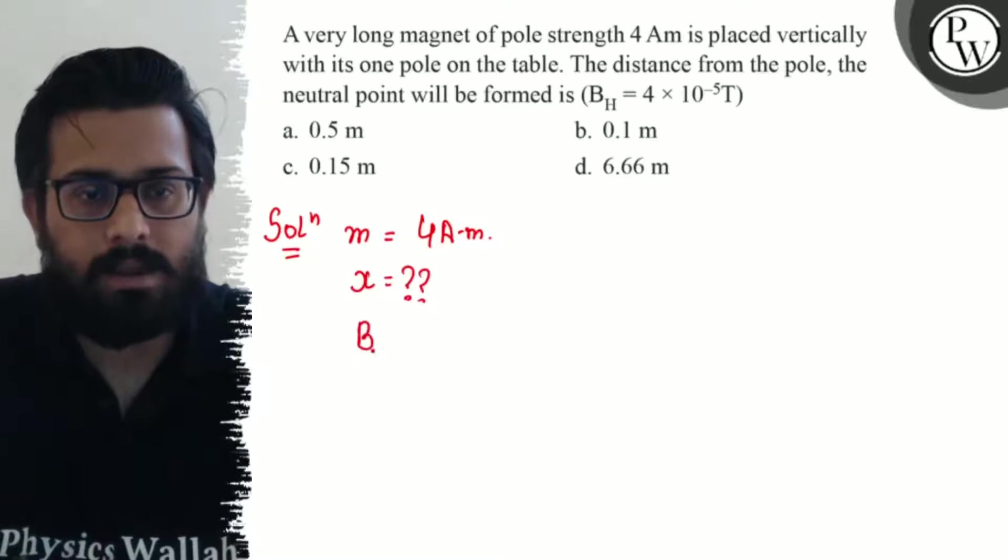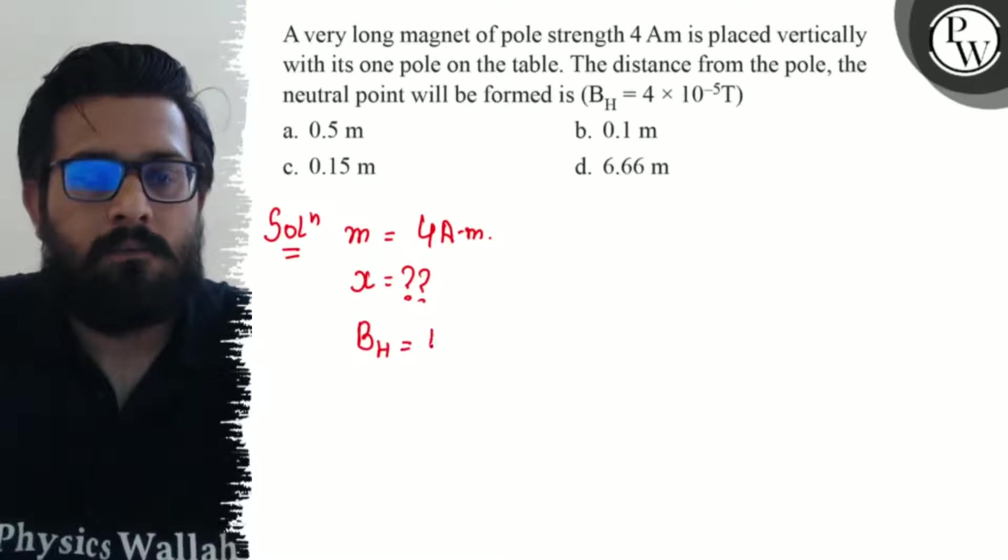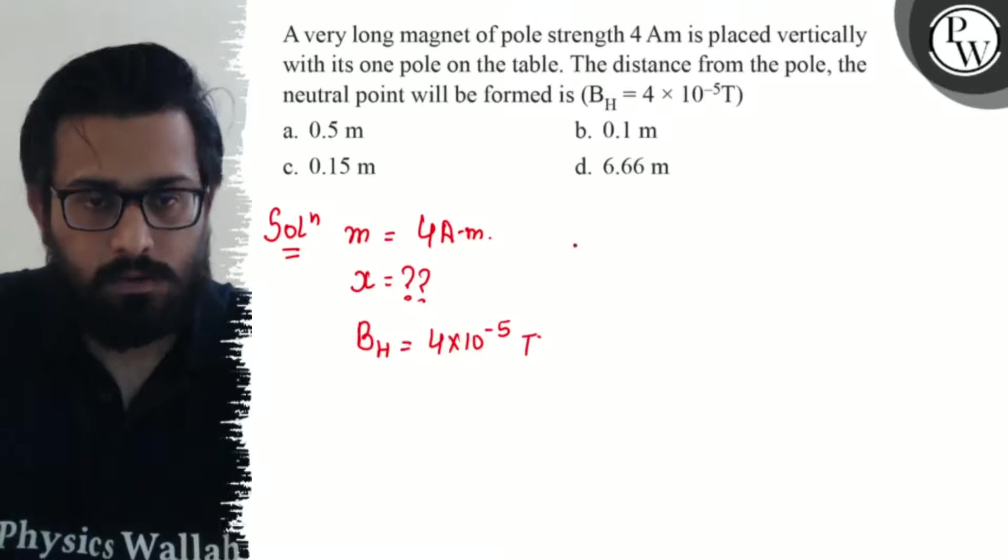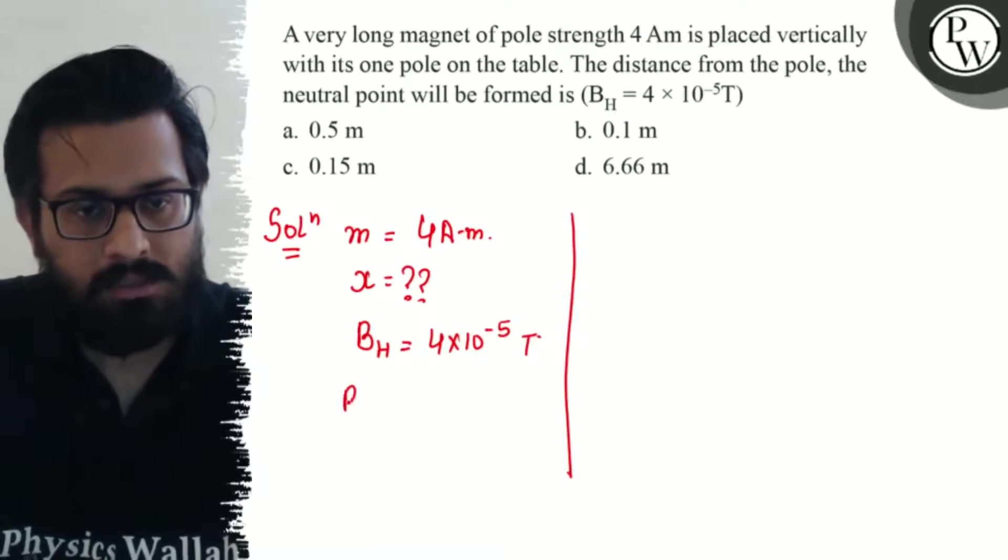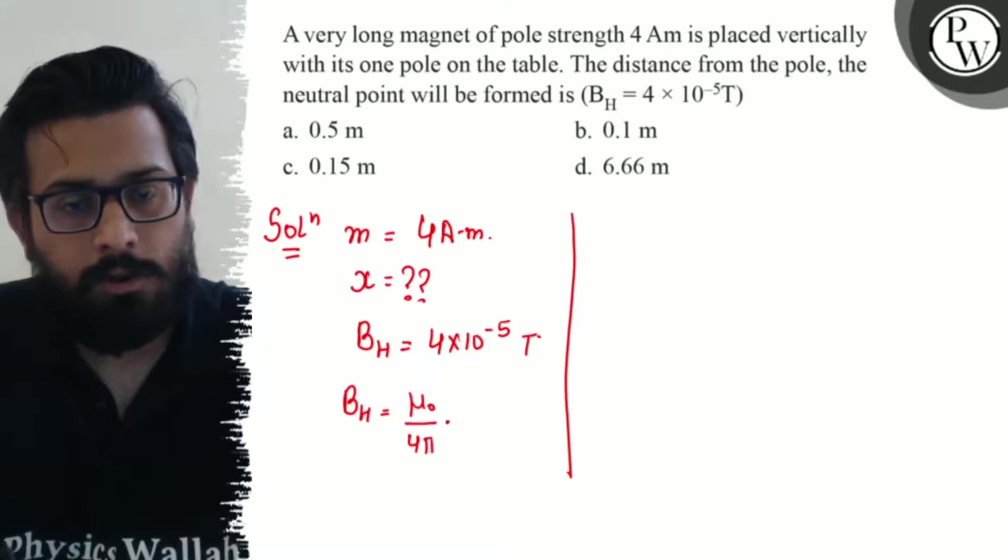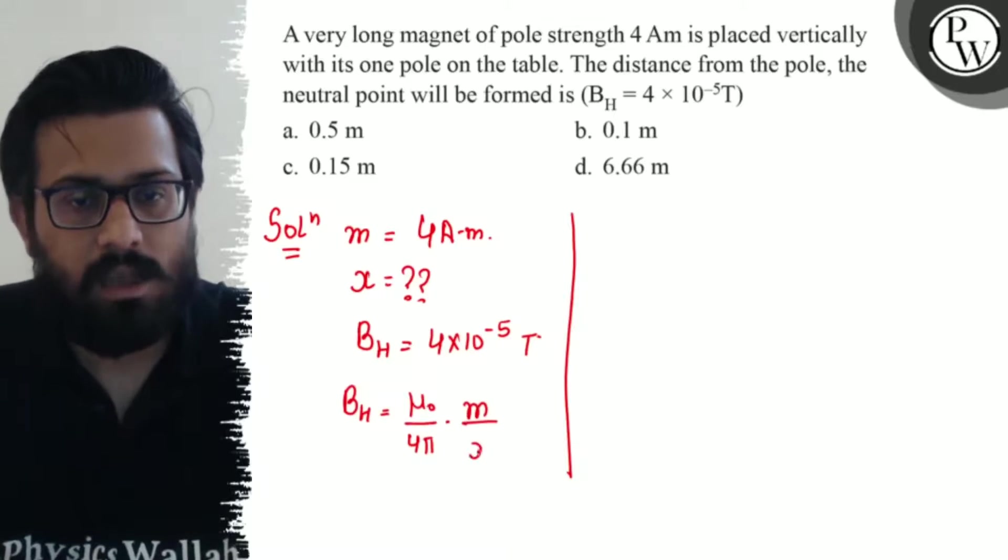The formula is Bh = (μ₀/4π) × (m/x²), where Bh is the horizontal component, μ₀ is the permeability constant, m is pole strength, and x is distance squared.